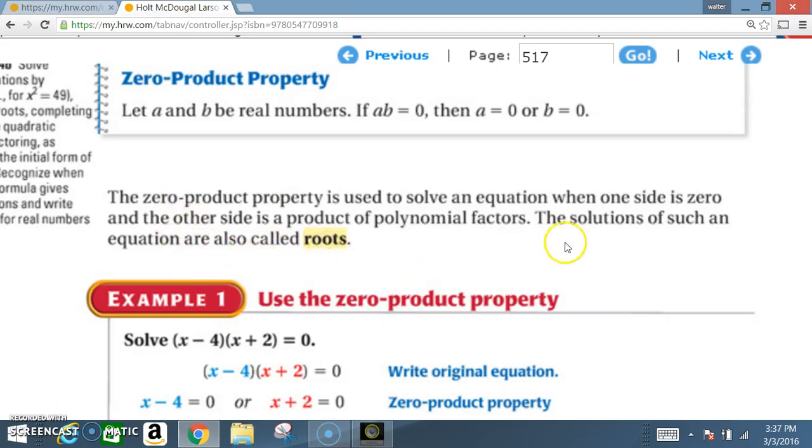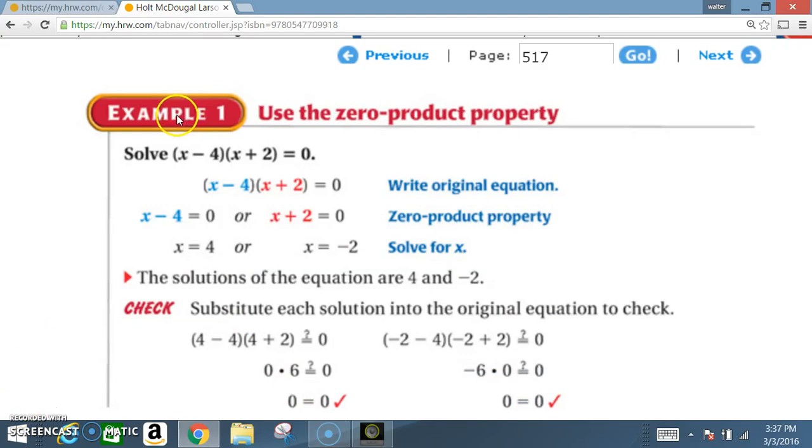The zero product property is used to solve an equation when one side is 0 and the other side is a product of polynomial factors. The solutions of such an equation are also called roots.